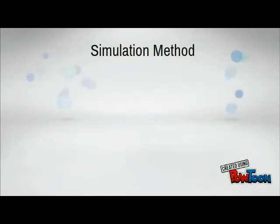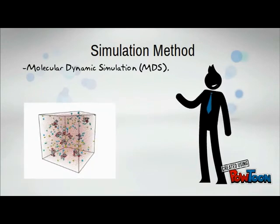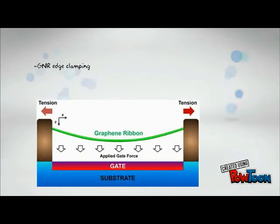For the simulation method, molecular dynamic simulation is done to explore graphene resonators as ultra-sensitive sensors. The resonance frequency of the suspended graphene is modeled using the average tension induced by the axial strain and the gate force. The first step in this experiment is to clamp both sides of the graphene nanoribbon as shown in the graph. The graphene nanoribbon has an armchair edge with a length of 70.7 nanometers and a width of 14.1 nanometers.